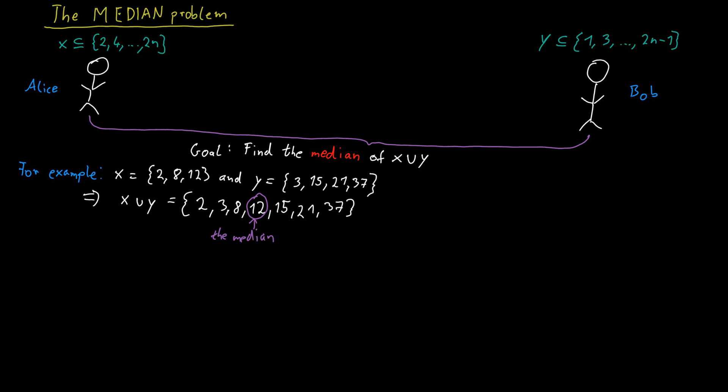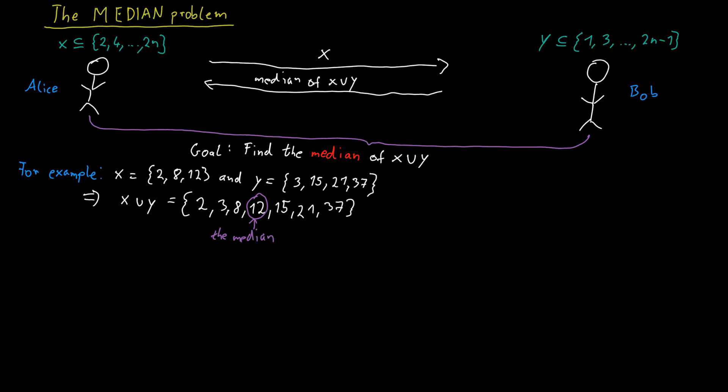Of course, we can use a trivial solution to come up with a communication protocol for this. Alice could just transmit the value of her set to Bob, who computes the median and returns the result to Alice. To communicate her set to Bob, Alice would need to send n bits, because she indicates for each even number between 1 and 2n whether it's contained in the set or not.